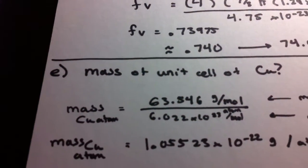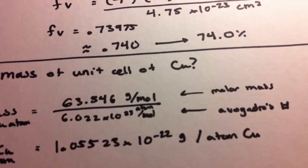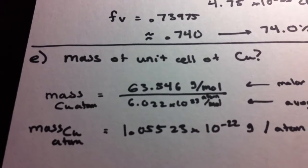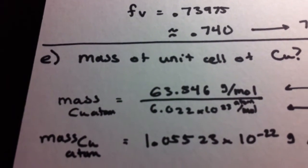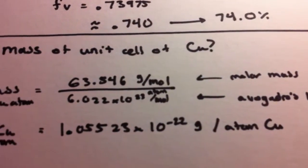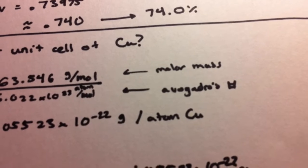Now, part E. Mass of the unit cell of copper. Note that it does not say mass of a single atom of copper. And there's a very big difference. Because the mass of a single atom of copper would be basically the molar mass, shown in a periodic table or anywhere, over Avogadro's number.